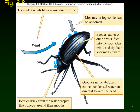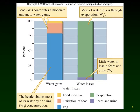The moisture condenses onto the body of the beetle, and little ridges allow that water to run down to their face so they can drink the little drops of water. Very clever little guys. Ecologist Paul Cooper looked at the water budget for this beetle — Onymacris — in the Namib Desert and estimated the rate of water intake was close to 50 milligrams of water per gram of body weight per day.